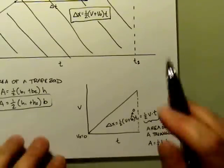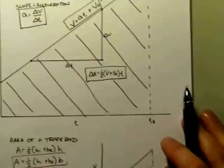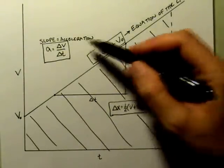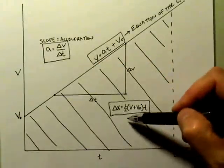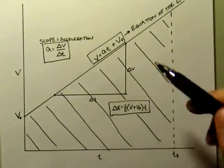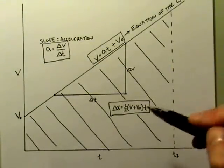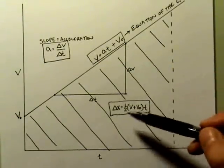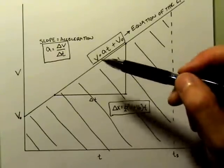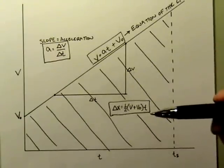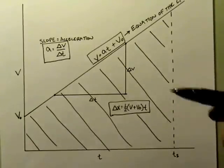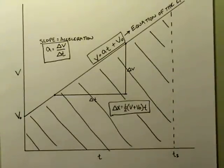With these three equations, you should be able to find essentially anything you need to know about an object's motion — Δx, V, V₀, t, and the acceleration — except for its initial position. You can find out just about anything on a VT graph.